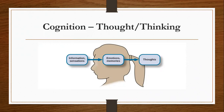Cognition itself refers to the encompassing processes associated with perception, knowledge, problem-solving, judgment, language, and memory. So the information and sensations we receive, as well as the emotions and memories we have, form our thoughts. That's a simple way to think about it.